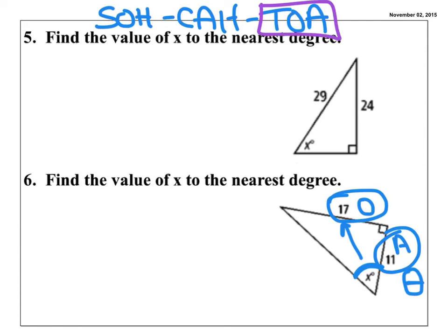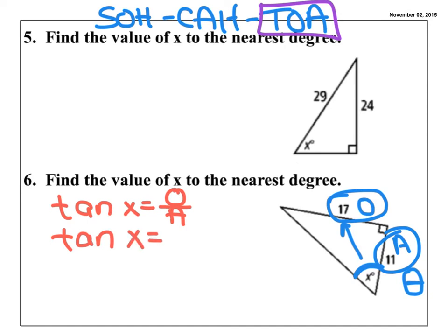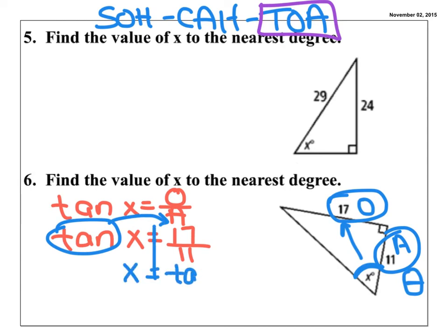Tangent of X equals opposite over adjacent. I don't know the angle, so that remains X. My opposite is 17 and my adjacent is 11: tangent of X equals 17 over 11. I bump the tangent to the other side — it becomes an inverse tangent — so X equals inverse tangent of 17 over 11. I press second tangent, 17 divided by 11, close parentheses, and I end up with X equals 57.1 degrees.